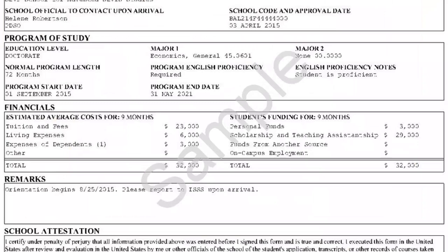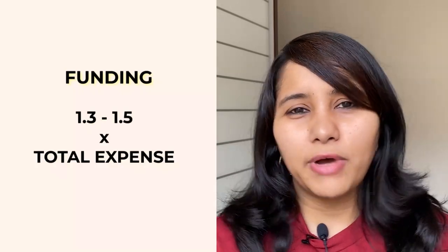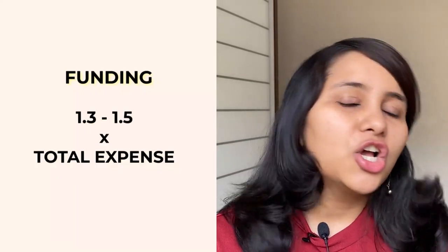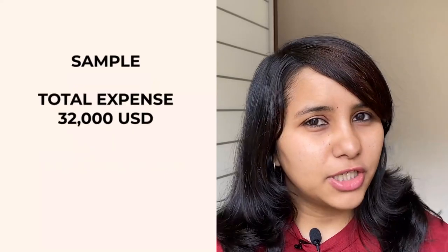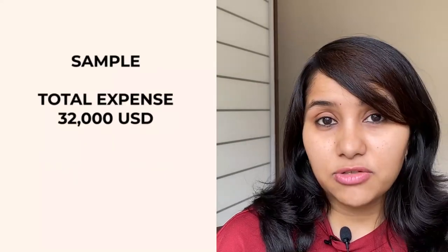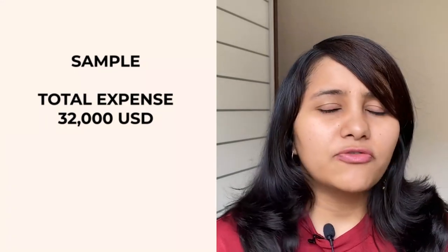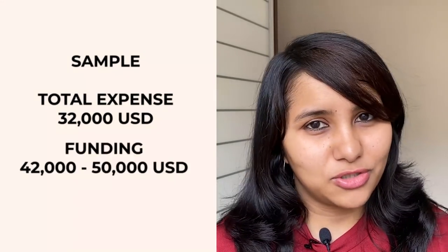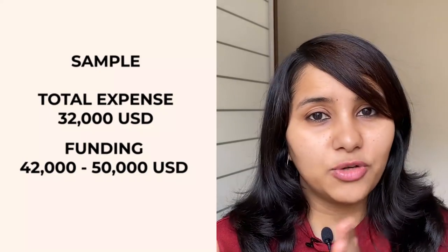Here's a sample I-20. You can see there's a table — on one side you have expenses, and on the other side you have the means of funding those expenses. The expense side usually lists tuition fees, living expenses, and any other expenses, giving you the total expense for your first year. A good ballpark is to make sure the funding you have is about 1.3 to 1.5 times that total. So if the total first-year expense is about $32,000 USD, your funding should be in the range of $42,000 to $50,000 USD.